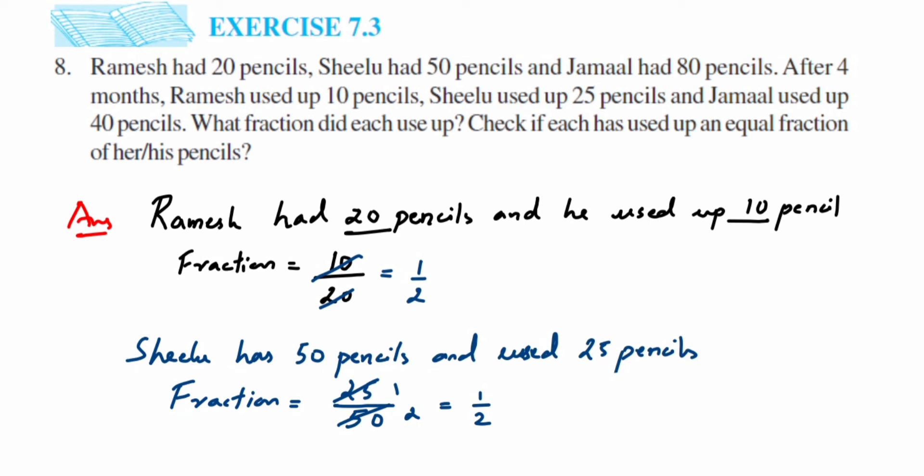So for both Ramesh and Sheelu we got 1 upon 2. Now I'm going to find out for Jamaal. Jamaal had 80 pencils, so I'm just going to modify the first statement. In place of Ramesh, I'm going to write out Jamaal.